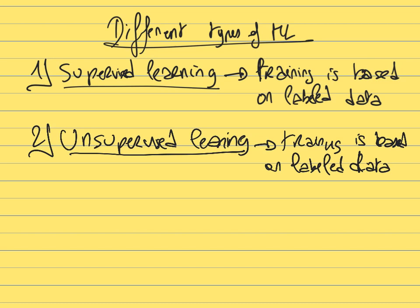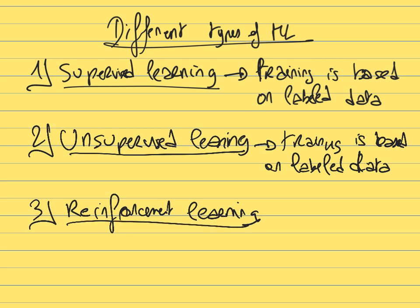The third category is reinforcement learning, which is slightly different. Here, instead of a pre-existing dataset, the computer learns in real time from the feedback of its environment — learning as it makes actions, either being rewarded or penalized.